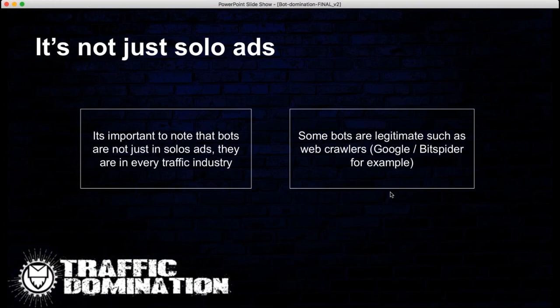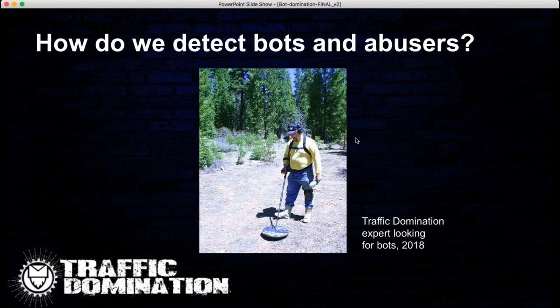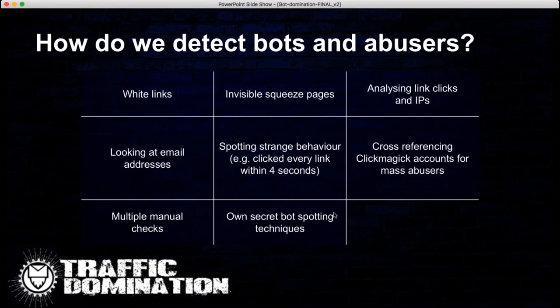The bad bots are the ones made for tricking people into losing money. In our case, they opt in and click emails. So how do we detect bots? We use things like weight links. Someone said to me that these can trigger spam filters, which they can, but we do it in such a way that it doesn't really matter — we only use them for blocking bots. We also look at email addresses; sometimes the same IP address has six email addresses that clicked within a few seconds. We look for those kinds of patterns.